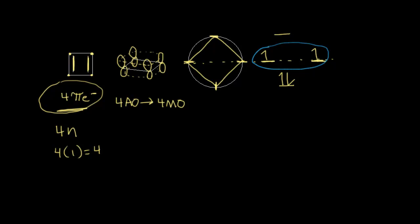This compound does satisfy the first criteria, so the term for this compound is antiaromatic. Antiaromatic means it fulfills the first criteria — a ring of continuously overlapping p orbitals — but does not satisfy the second criteria. It does not have 4n plus 2 pi electrons; it has 4n pi electrons. There are actually very few examples of antiaromatic compounds, but cyclobutadiene is considered to be antiaromatic. In the next video, we're going to look at a few more examples of aromatic stability.